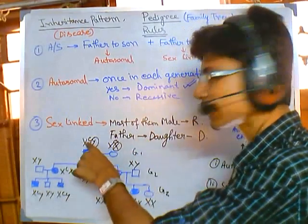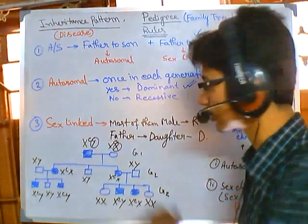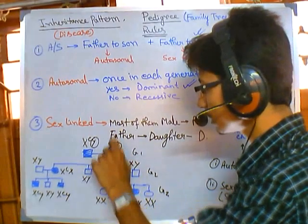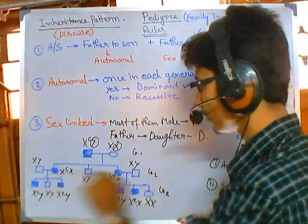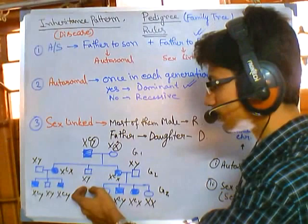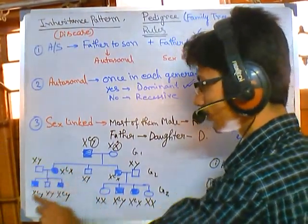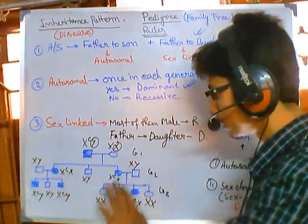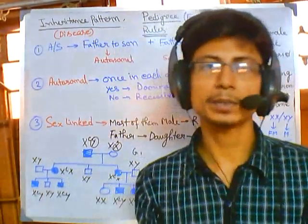For X-linked dominant, if one X is infected the whole phenotype is affected. So Xc Y crossed with XX gives Xc X daughters — infected — and XY sons — uninfected. In the similar cross, two sons are infected and one is not. That's how the X-linkage works out. I hope this will help you. Thank you.